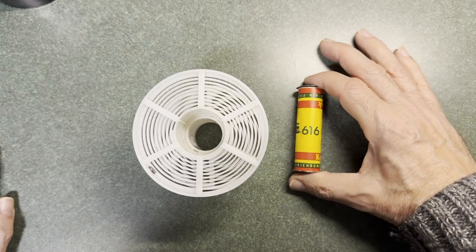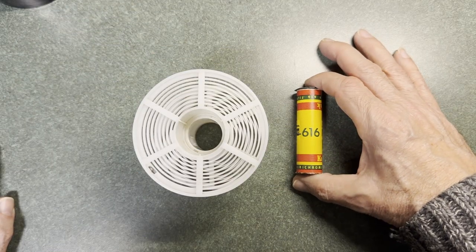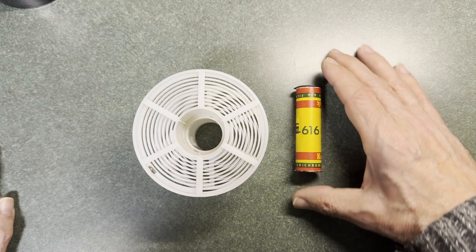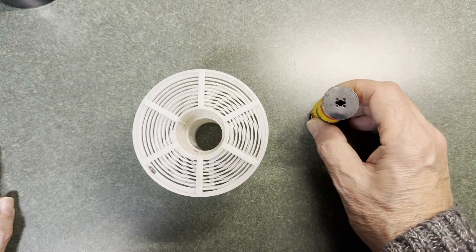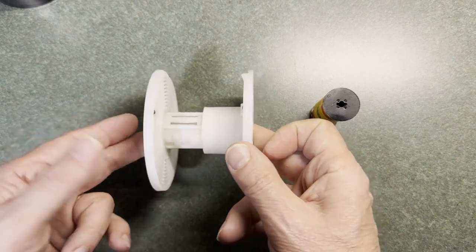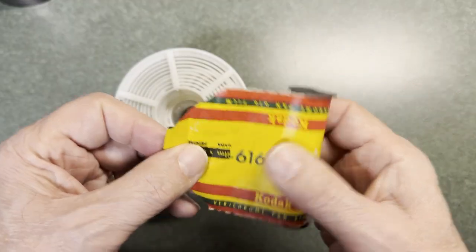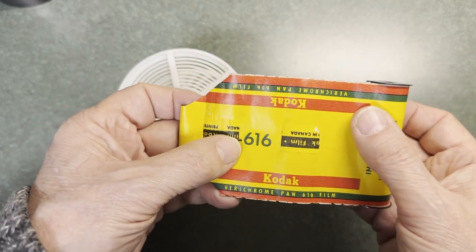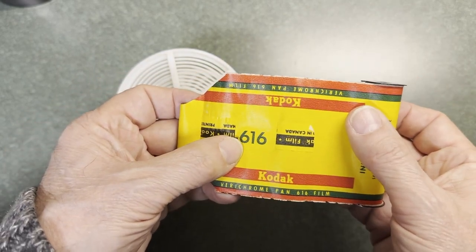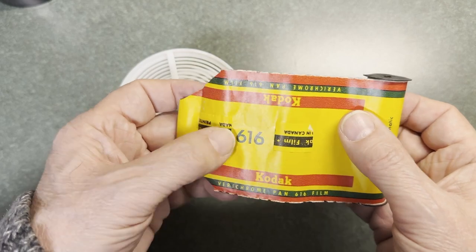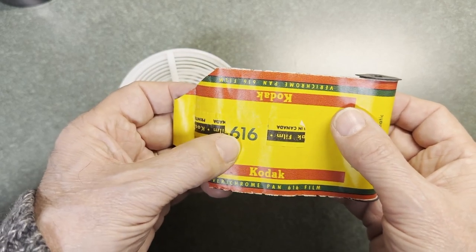We have a roll of vintage 616 film and we want to develop that in our Patterson tank with our regular spool. Everything I'm about to show you also applies to 116 film; both 616 and 116 are 70 millimeter.